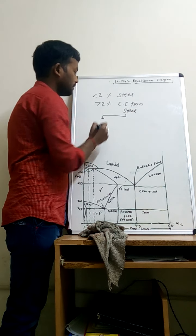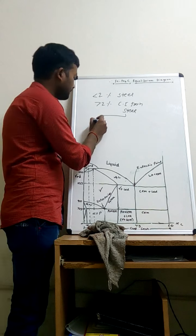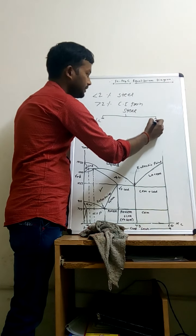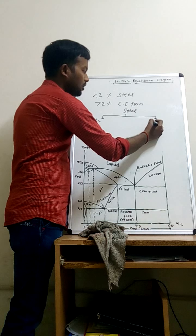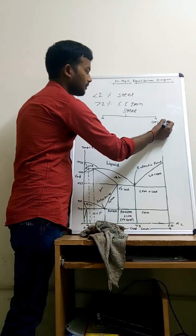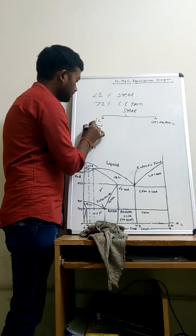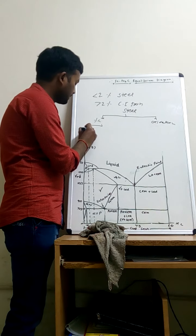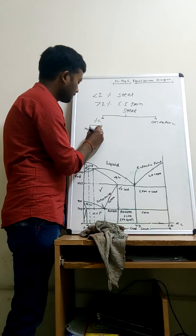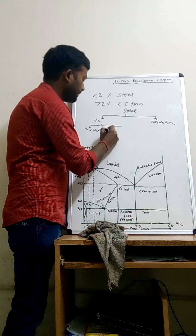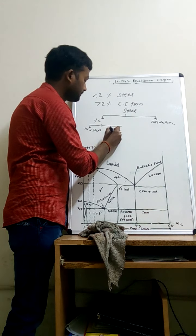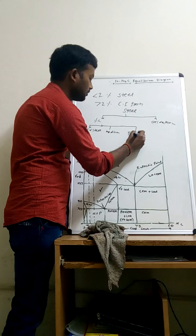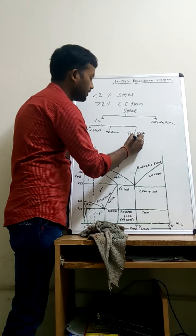I have classified steel into two types. The first is by percentage of carbon and the second is by type of oxidation. By percentage of carbon, there are three types of steel: first is mild steel, second is medium carbon steel, and third is tool steel, which is also called high carbon steel.